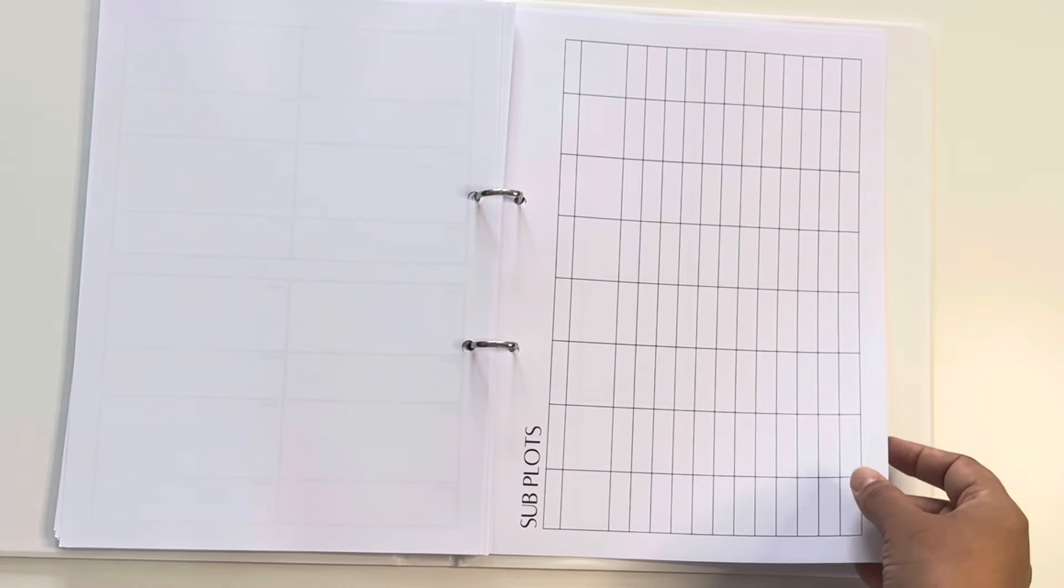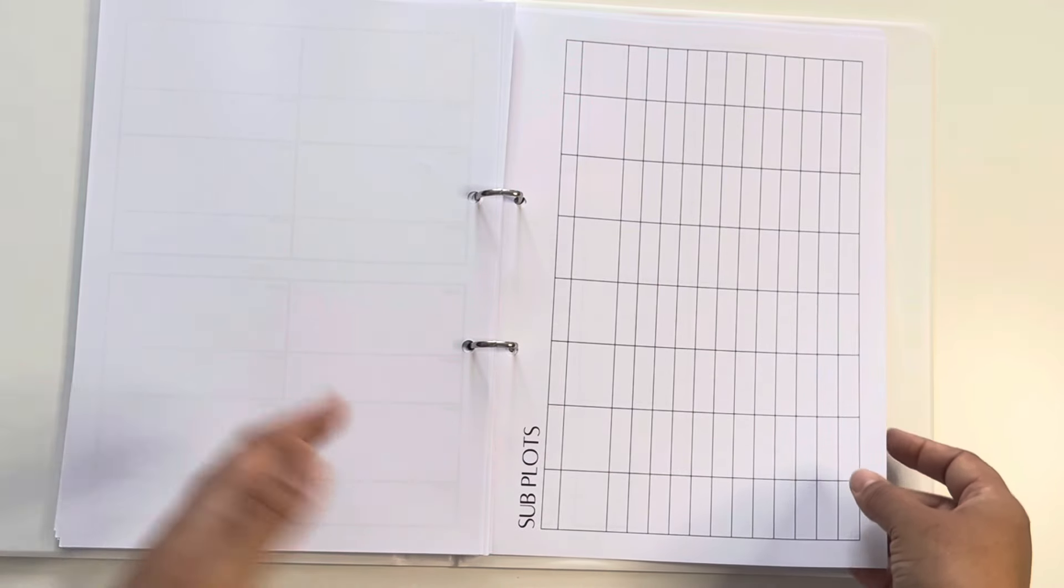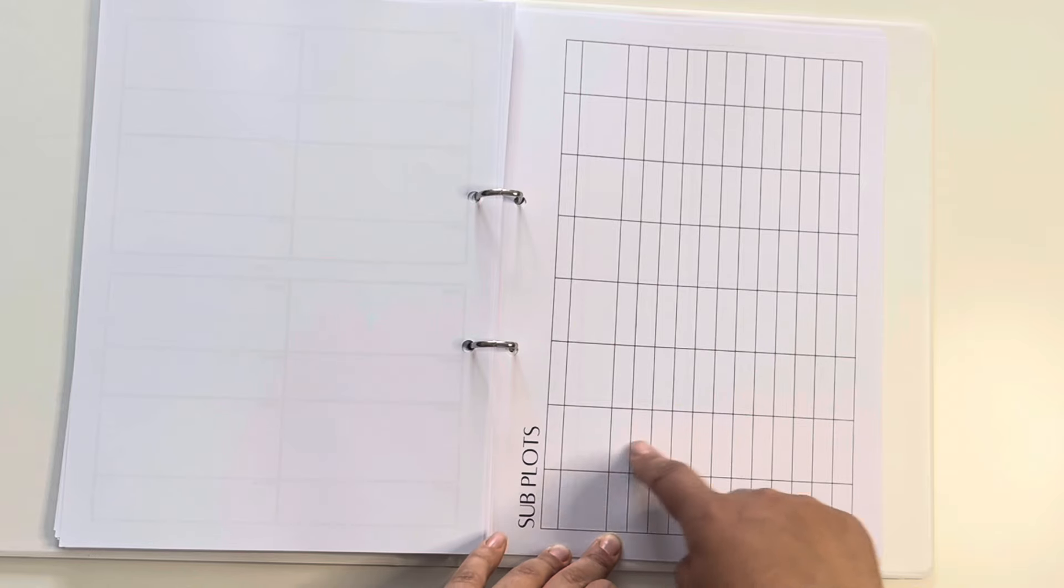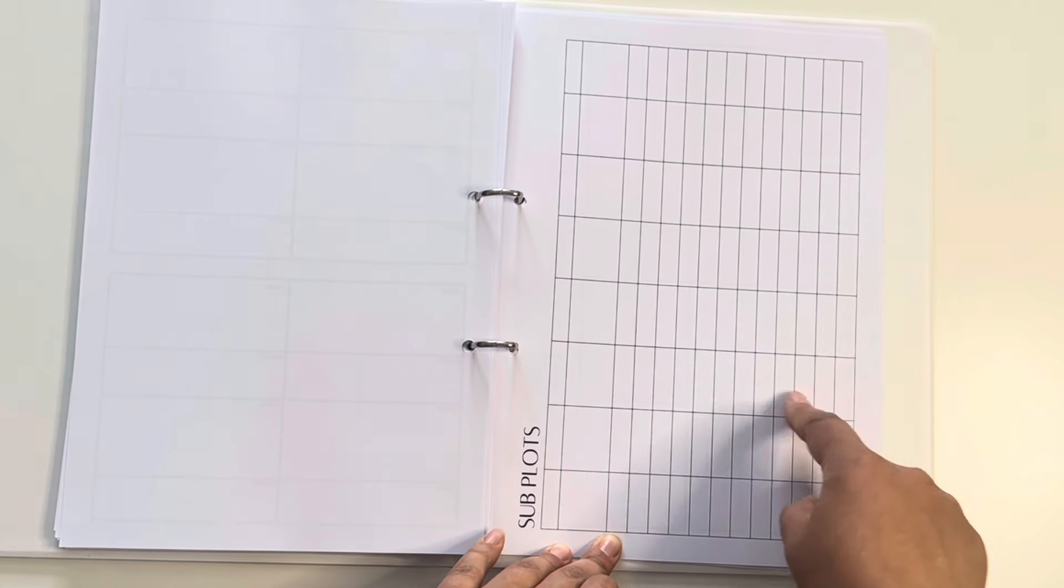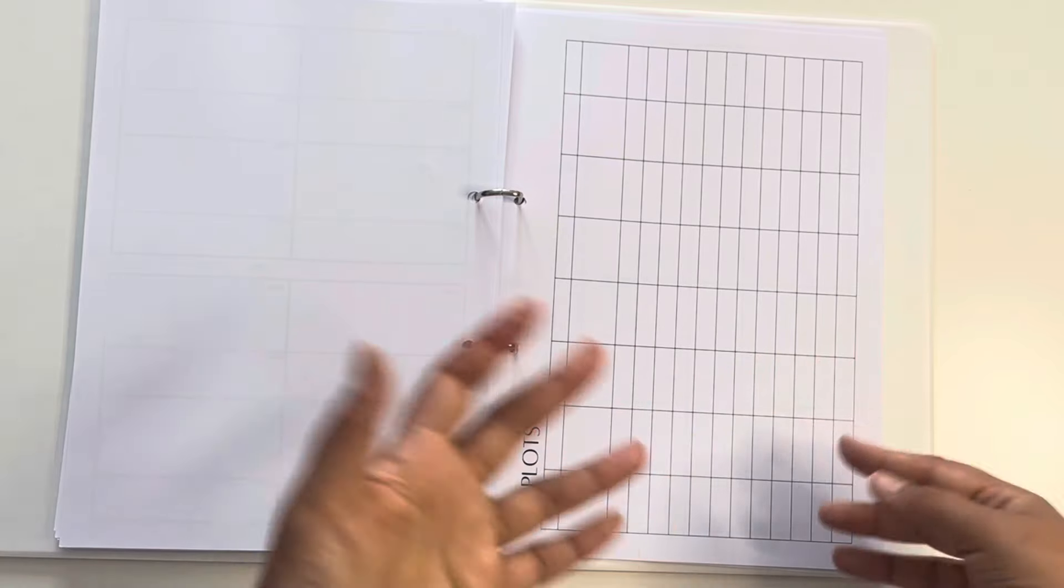Every single time we have a chapter related to that subplot is going to be noted down here. So I can keep track of how they ebb and flow, where they start, where they end. I can see if we've not focused on a specific subplot for a character for very long, which means I would need to go back and add more subplot details into previous chapters.